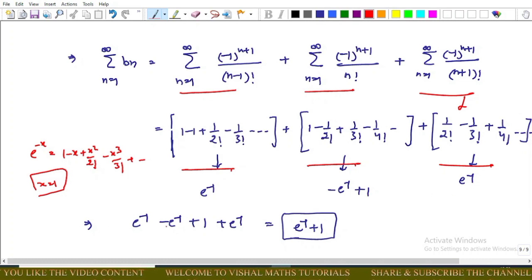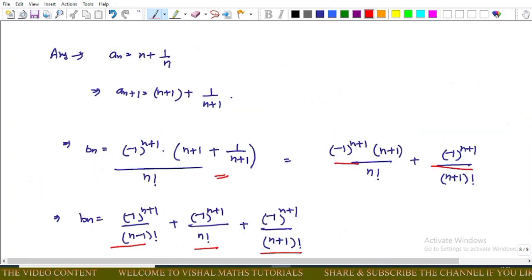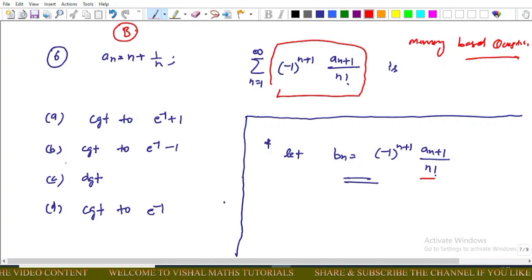And combining this under summation, we get cancel out and left e power minus 1 plus 1. Now come to options. Option B, C, and D are incorrect, and option A is correct.